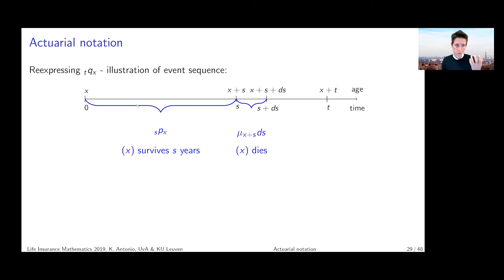And we know that survival until age x plus s, that's with probability _sP_x. And then given that you've reached age x plus s, you're going to die right after that probability is expressed as we discussed earlier on by the force of mortality mu_{x+s} multiplied with ds. That's the length of the interval.